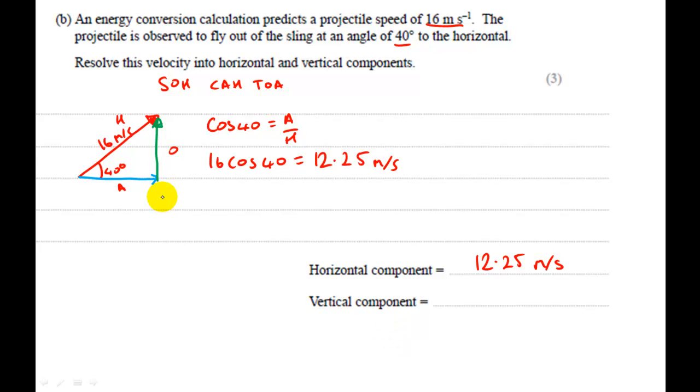Now let's have a look for this vertical component. I've got o, and I've got h, so I can use o h, it's sine. Sine 40 is equal to opposite over hypotenuse. And I want to find o, so multiply by h, h is 16, so it's 16 sin 40 will be equal to, just quickly work that out, 10.28 meters per second.